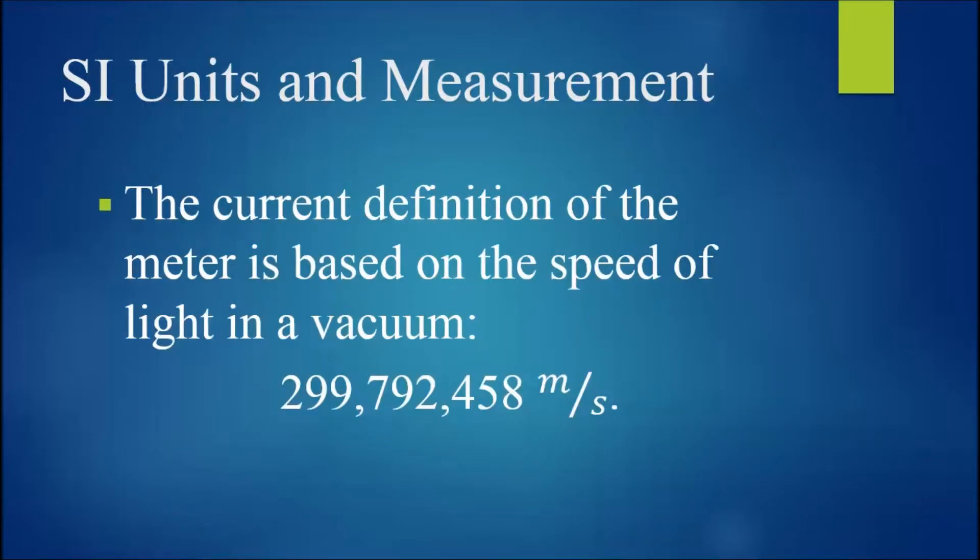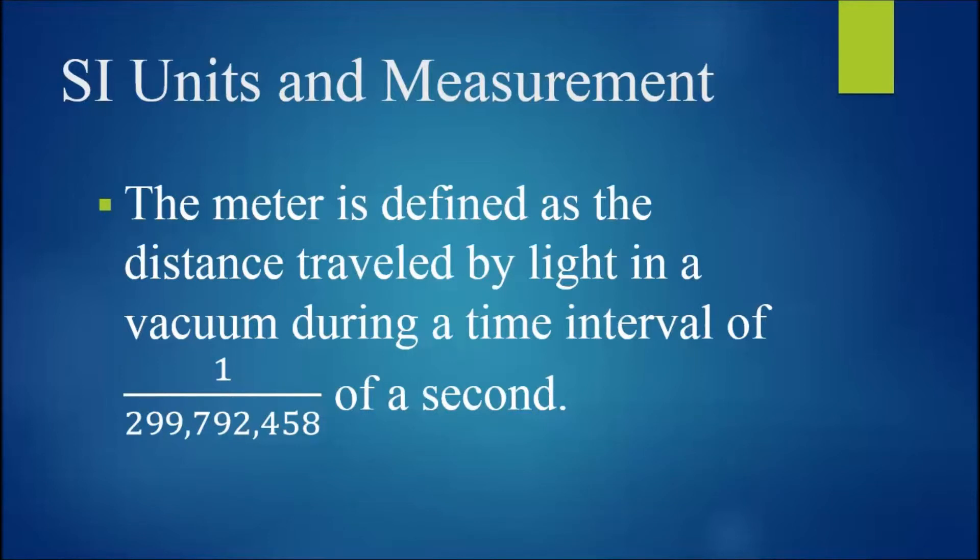The meter is defined so that the speed of light in a vacuum is exactly 299,792,458 meters per second. Now, while it may at first appear odd to define length in terms of time related to the speed of light in a vacuum, when you study special relativity, you will find that the speed of light in a vacuum is a constant, and that what we perceive separately as space and time are actually part of the same reality called spacetime. Okay, so once again, the three physical quantities that we will be most concerned with in classical mechanics are mass, length, and time.